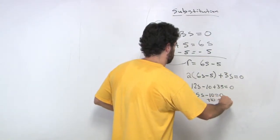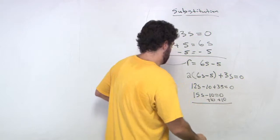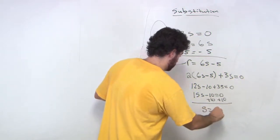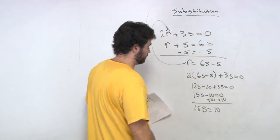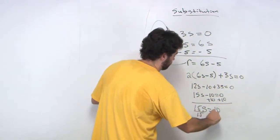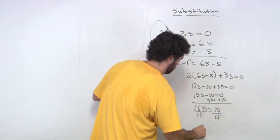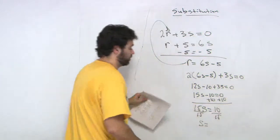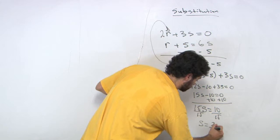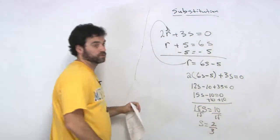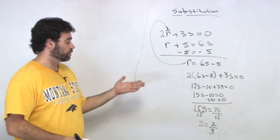Add the 10 to both sides, so we get s is equal to, 15s is equal to 10, divide by 15, and we get s is equal to, reduce it by 5, we get 2 over 3, 2 thirds. s is equal to 2 thirds. Again, another fraction.